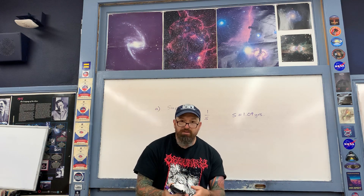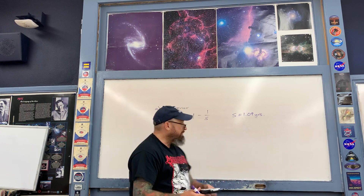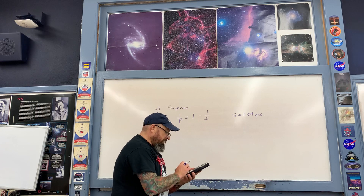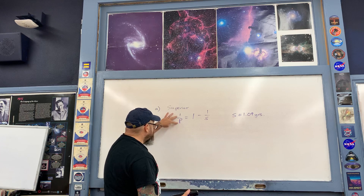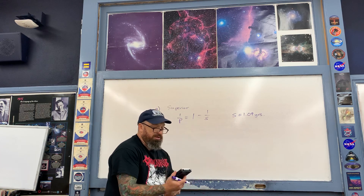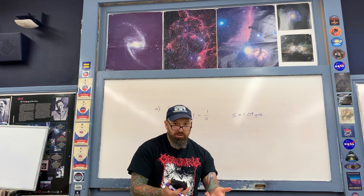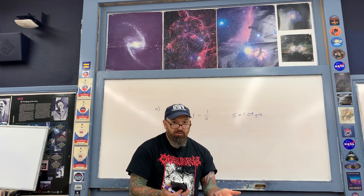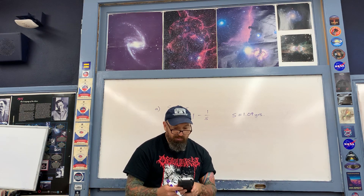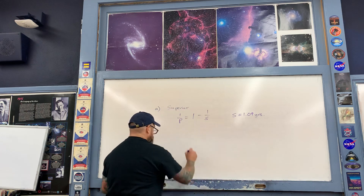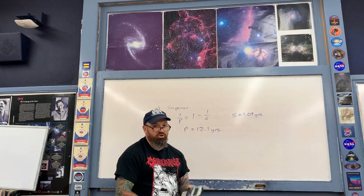I'm going to do all the math on my calculator — you'll want to double check this on your own. So I compute 1 minus 1 divided by 1.09, hit equals, and then take the reciprocal of that answer to obtain the sidereal period P, which is in years — that's the planet's orbital period. Taking the reciprocal, I end up with about 12.1 years. That's how long it takes Jupiter to go around the Sun.